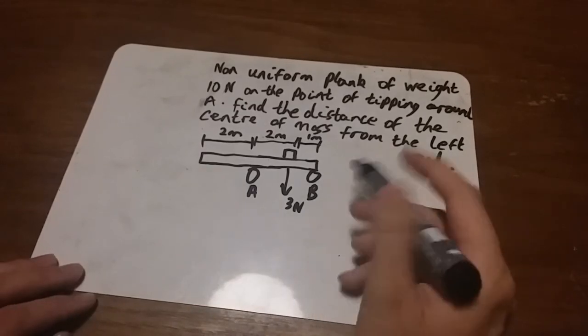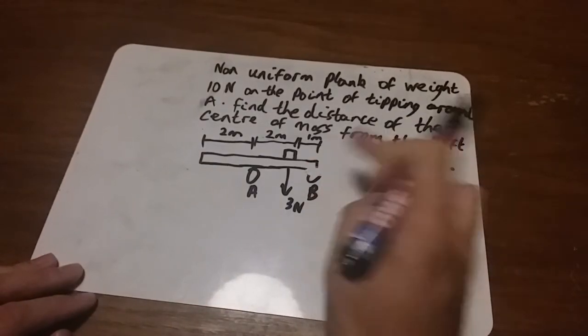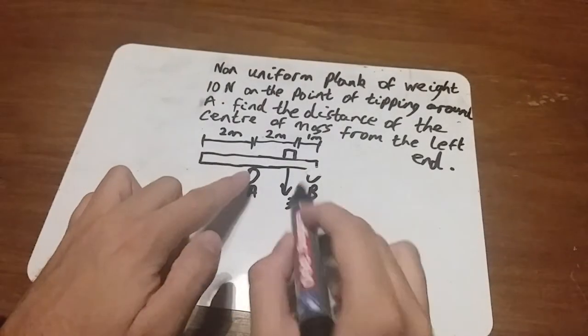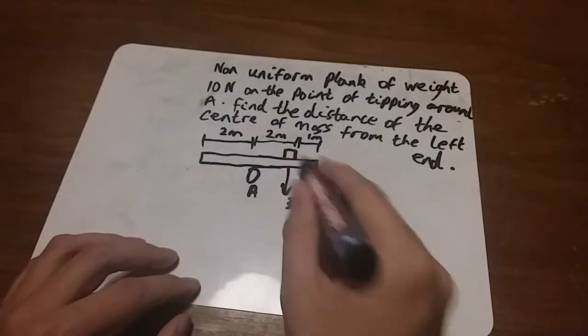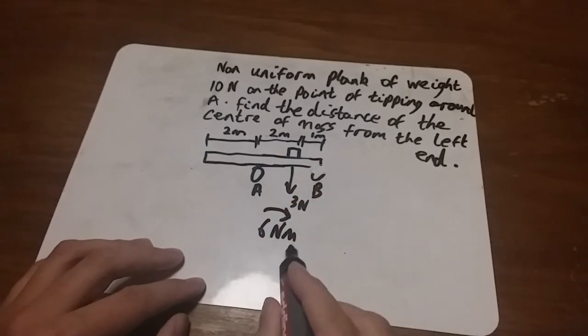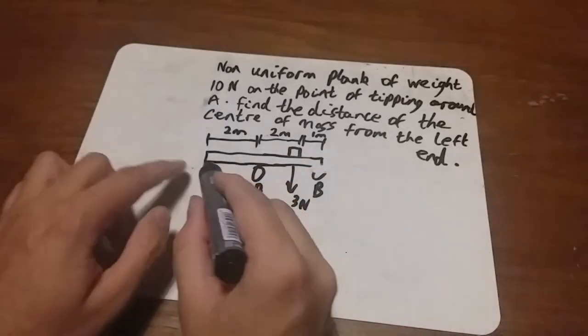If it's on the point of tipping, this point B doesn't really matter. There's not going to be a reaction force up there. Total moment going around this way would be two times three, which is six newton meters. Going around that way.